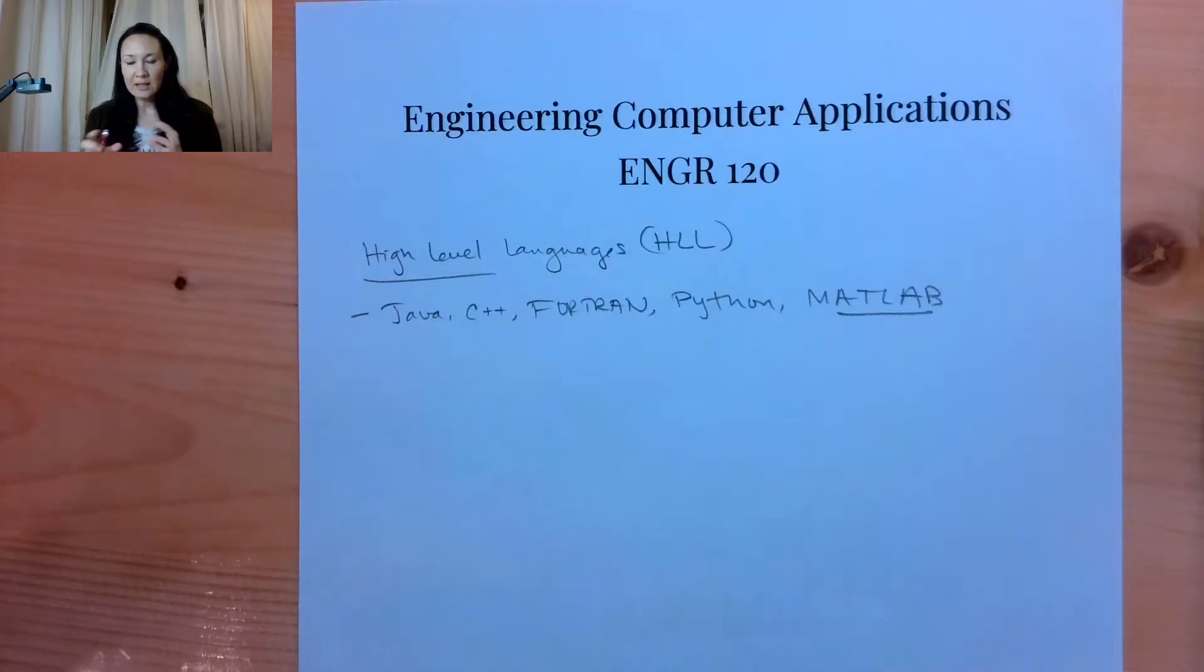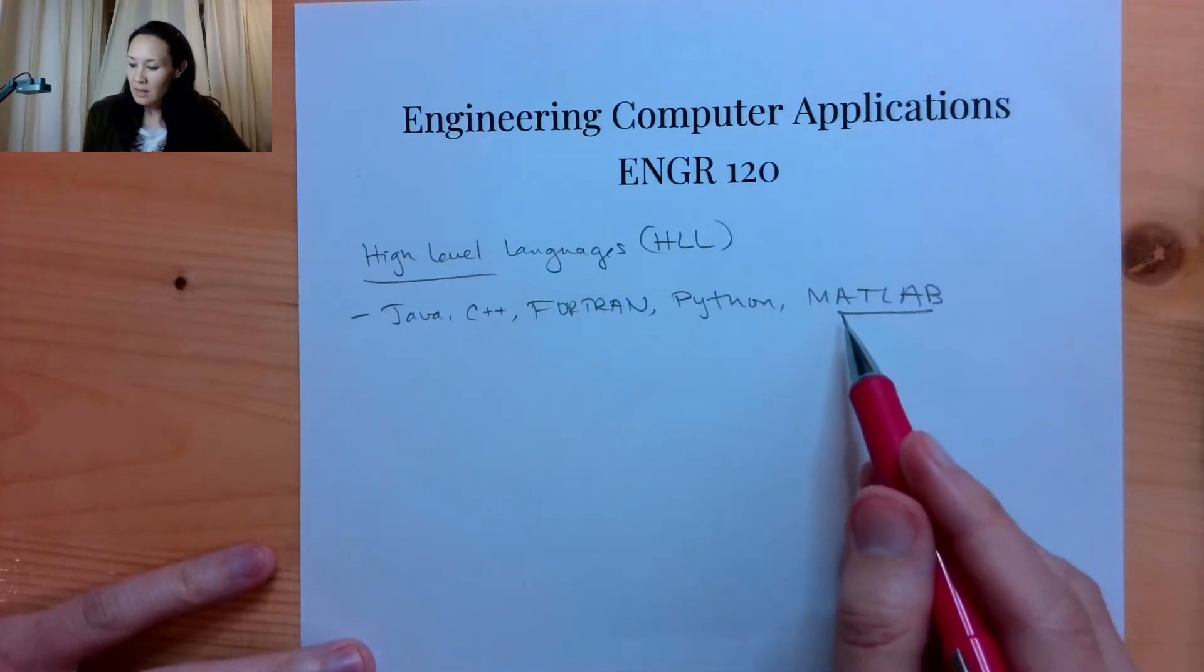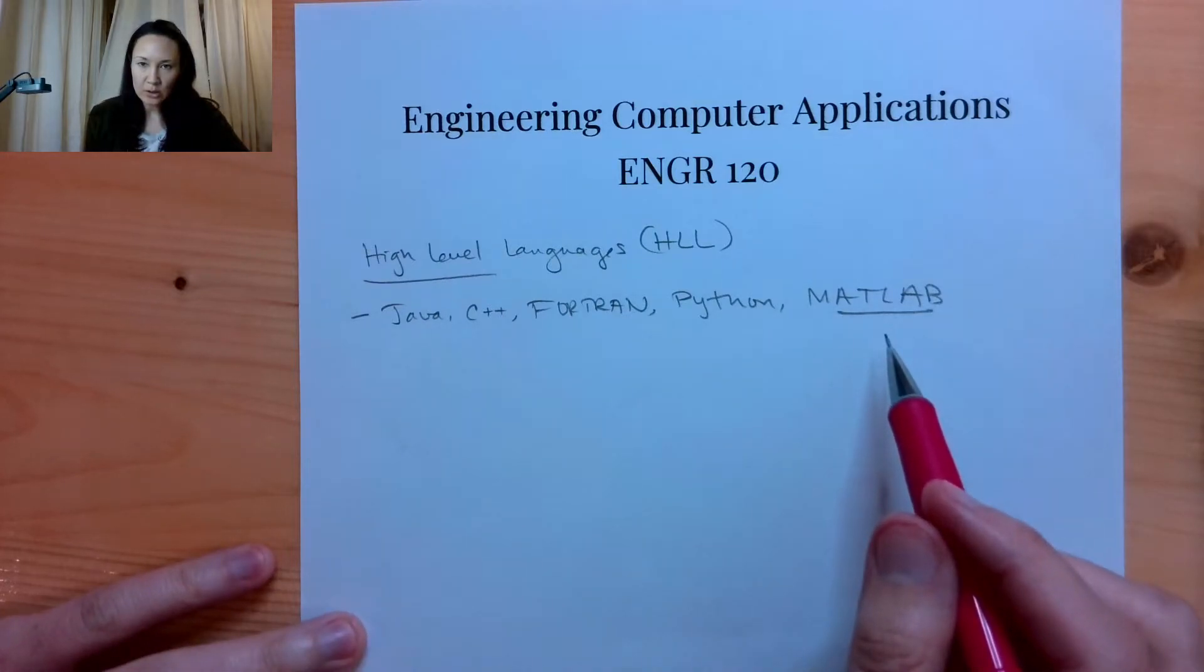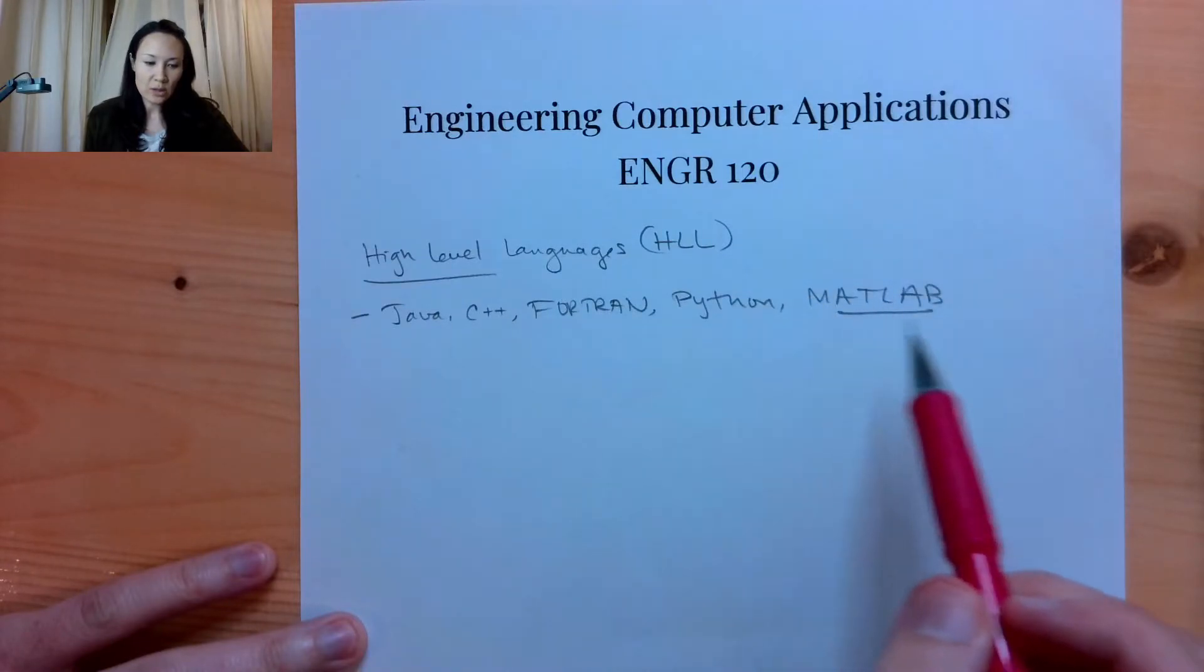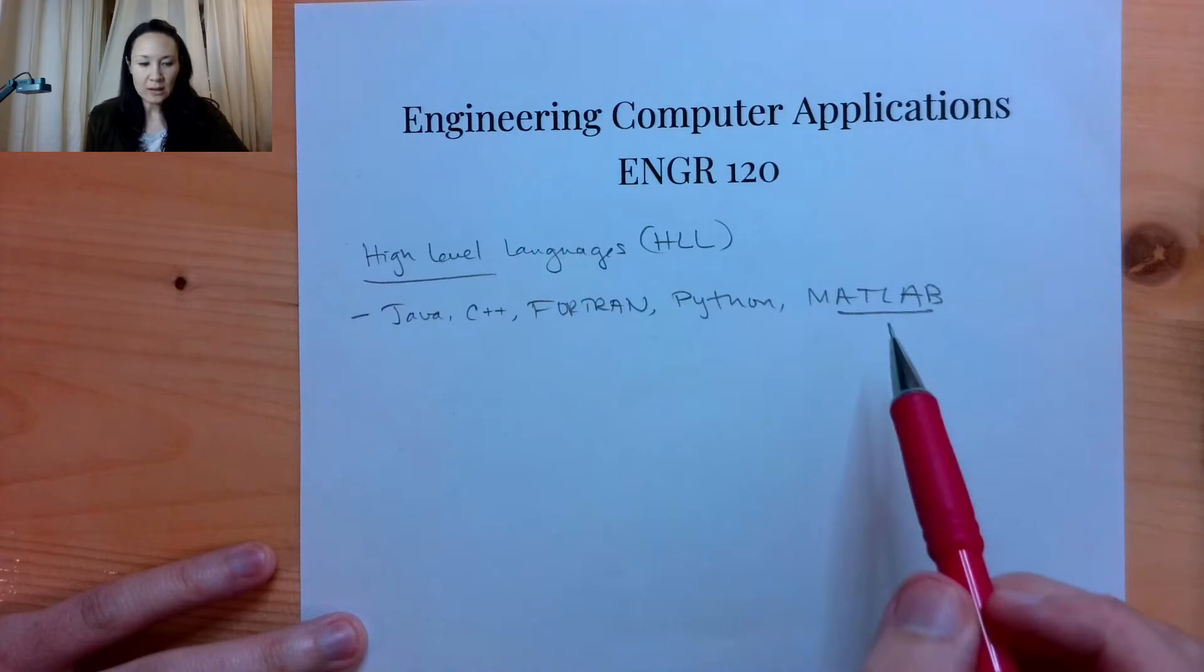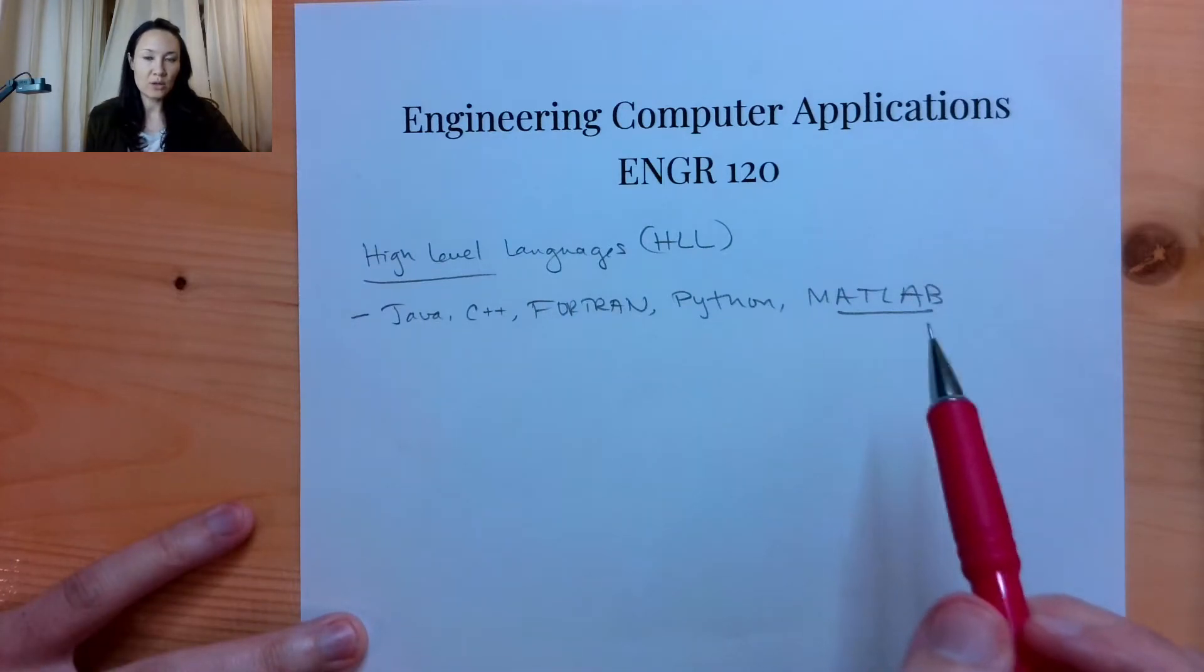MATLAB is fast. It has a nice environment where it's interactive, so you can tell MATLAB to do something, it'll do it, and it'll spit out the answer immediately, so you don't have to recompile your program every time to run it and see the results if you make a modification. MATLAB is considered a high-level language because it kind of more resembles the English language. So it's more English-like. It's easier for programmers to understand.